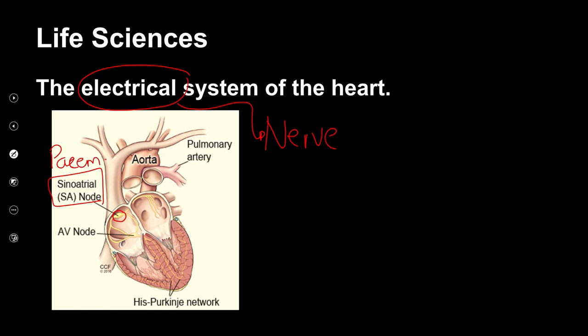Some people, if their SA node doesn't work, they put a little pacemaker in the heart — a little battery thing that fires and gets the heart going. When this nerve works, it says contract. Can you see that? It sends a message and the atria contract. That's the first thing that happens.